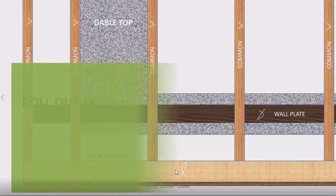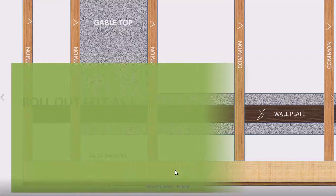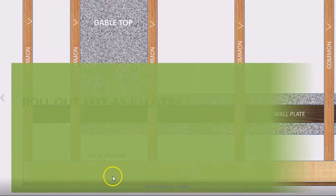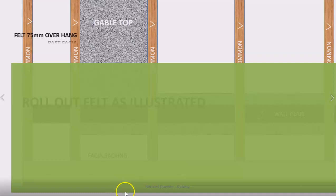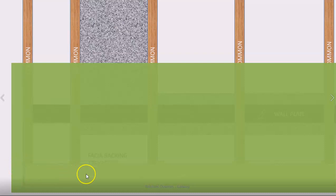Here's your felt rolled out, usually overhanging the fascia by about 50mm, and 75mm overhanging the edge here.